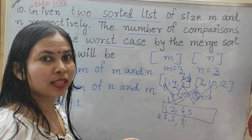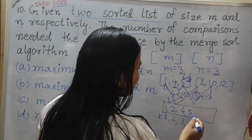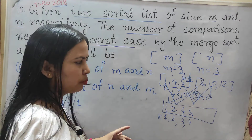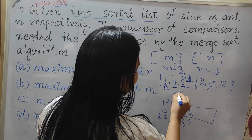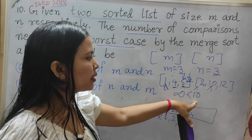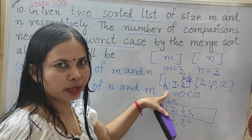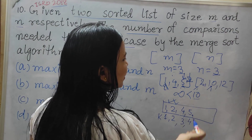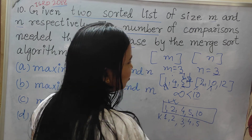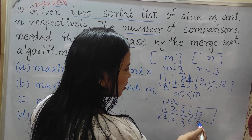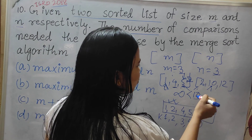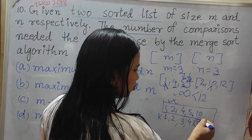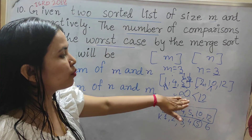When no elements remain, we assume it is infinity. So then we compare infinity with 10 — infinity less than 10? No. So 10 comes as the 5th element, that is 5 comparisons. Then infinity compared with 12 — infinity less than 12? No. So 12 comes, that is the 6th comparison.